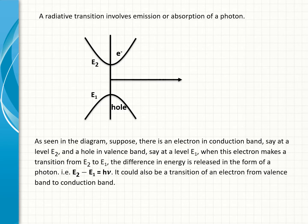As seen in the diagram, suppose there is an electron in conduction band, say at a level E2, and a hole in valence band, say at a level E1. When this electron makes a transition from E2 to E1, the difference in energy is released in the form of a photon, i.e., E2 - E1 = hν. It could also be a transition of an electron from valence band to conduction band.